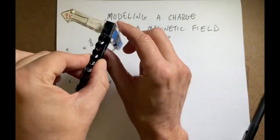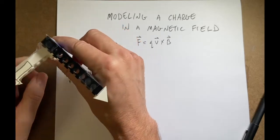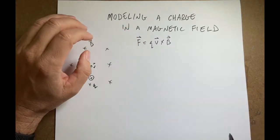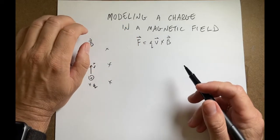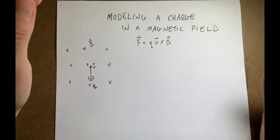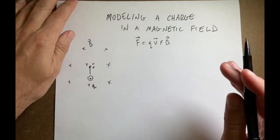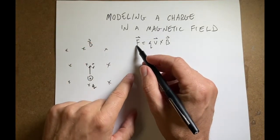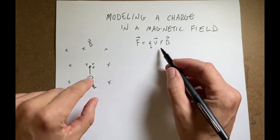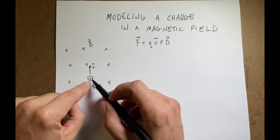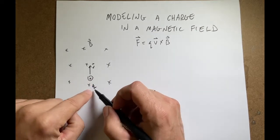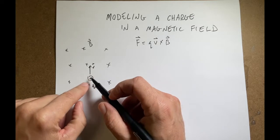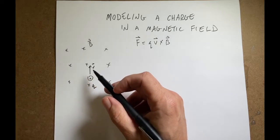No matter where it goes, it's always going to be a sideways force, which makes it move in a circle. I want to show that this happens organically. So the first thing we're going to do is set up the situation. I'll have a proton, make a magnetic field, and then give it some initial velocity.